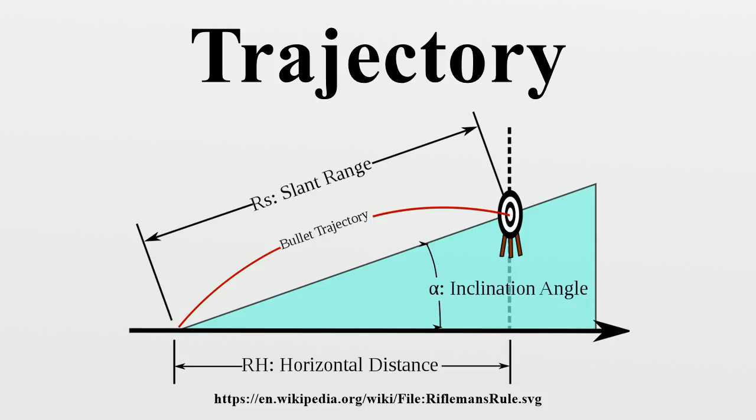Rifleman's rule: Thus if the shooter attempts to hit the level distance R, he will actually hit the slant target.